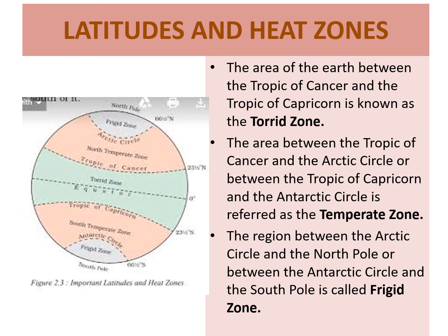The third zone is the Frigid Zone. This zone lies between the Arctic Circle and the North Pole, and between the Antarctic Circle and the South Pole. This zone is also called the Polar Zone. It receives extremely slanting rays of the sun, and the temperature is extremely low throughout the year. Frigid means very cold, so this area is known as the Frigid Zone.